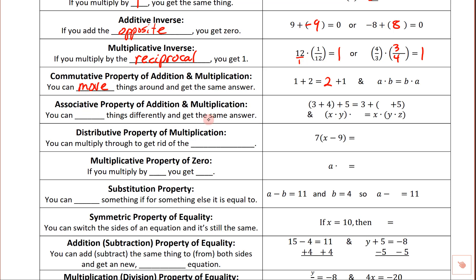The associative property of addition and multiplication — when you associate, you group together, like you associate with your friends. What that means is you can group things differently and get the same answer. For example, three plus four plus five: it doesn't matter if I add three and four first, or four and five first — you get the same answer either way. The same is true with multiplication: x times y times z — grouping x and y first, then multiplying by z, gives the same result as grouping y and z first.